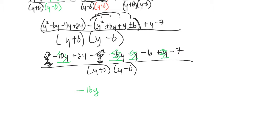Now I just have to do my numbers. So 24 take away 6 is 18, and 18 take away 7 is 11. So plus 11. All over y plus 6, y minus 6.